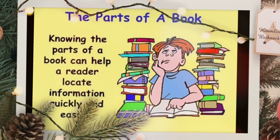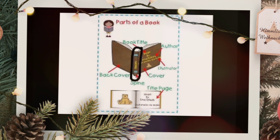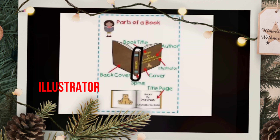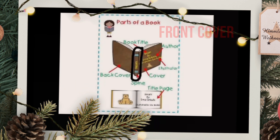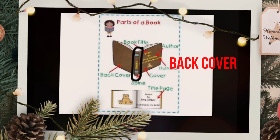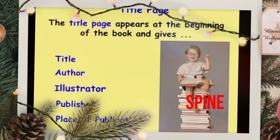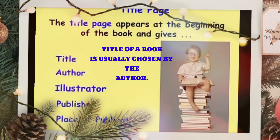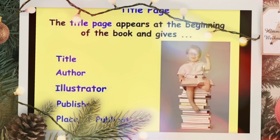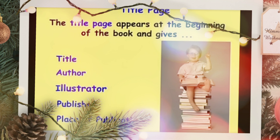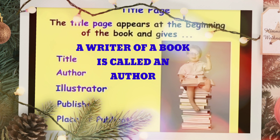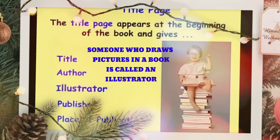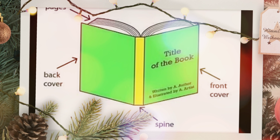Basically, the book is divided into six parts: title, author, illustrator, front cover, back cover, and spine. The title of a book is the name for the work, which is usually chosen by the author. A writer of a book is called an author, and someone who draws pictures in a book is called an illustrator.